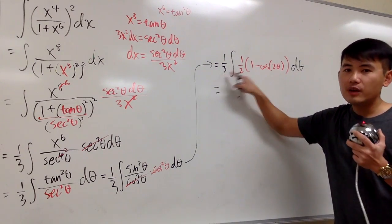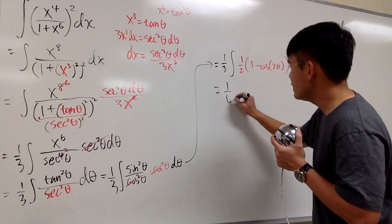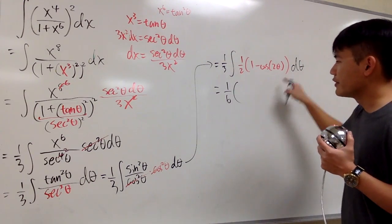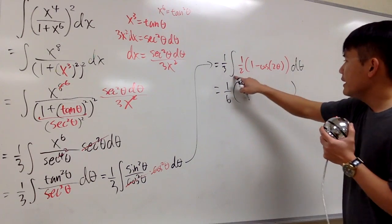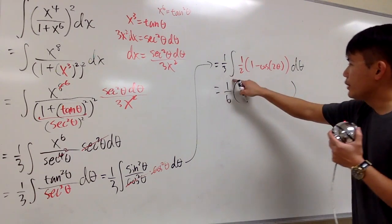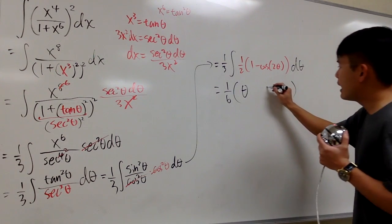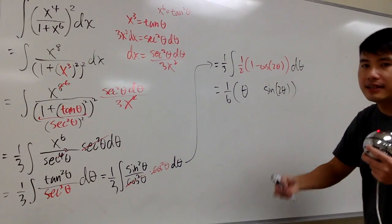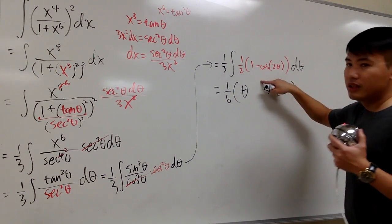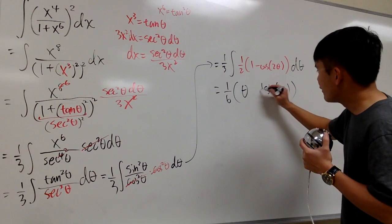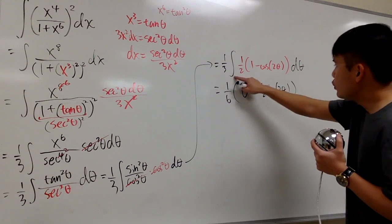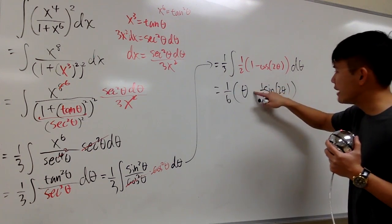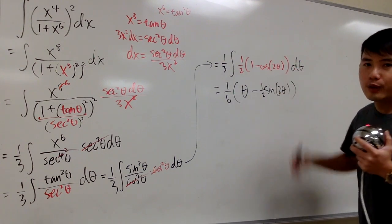We have 1/3 out front, multiplied by 1/2 gives us 1/6. Now the integral is ready: integrating 1 gives theta, and integrating cosine of 2 theta gives sine of 2 theta, but we divide by the derivative of the input — which is 2 — so we multiply by 1/2. The integral of cosine is positive sine, so the subtraction stays. That completes the integration step, and we just need to convert back to the x world.